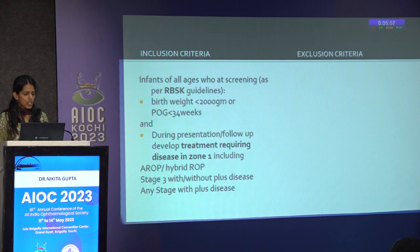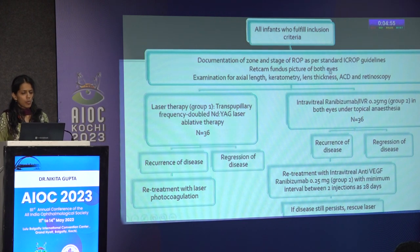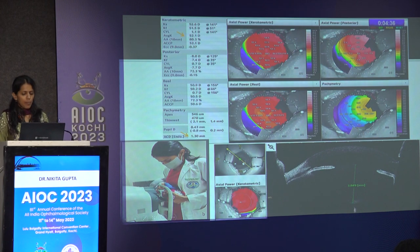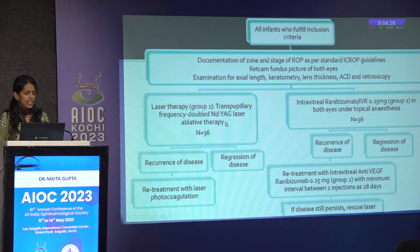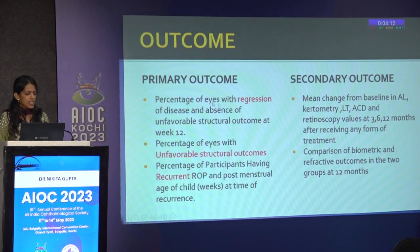Baseline RETCAM fundus photo was done for both eyes of all infants. Axial length was measured using A-scan biometry. Cycloplegic retinoscopy was done. Keratometry, lens thickness, and anterior chamber depth were measured by swaddling the baby in horizontal position on the ASOCT machine, with keratometry and ACD values obtained using topographic map and lens thickness measured manually with calipers. Infants were randomized into double-frequency Nd:YAG laser and intravitreal ranibizumab 0.25 mg in both eyes. In case of recurrence in the laser group, retreatment was done with laser; in the ranibizumab group, retreatment was done with intravitreal ranibizumab after a minimum interval of 28 days.